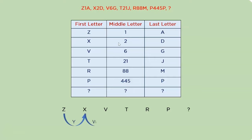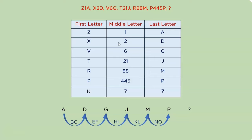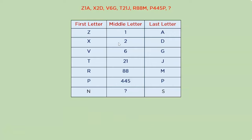For the starting characters, each step one character has been omitted — Z and X with Y omitted, V and T with U omitted. Applying the same logic, the next character should be N. For the last letters, two characters are omitted for each inclusion: after A we have D, after D we have G — so BC and EF are omitted. Accordingly, we discard Q and R and include S.